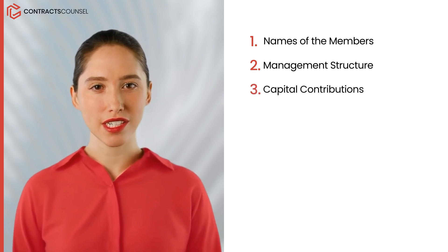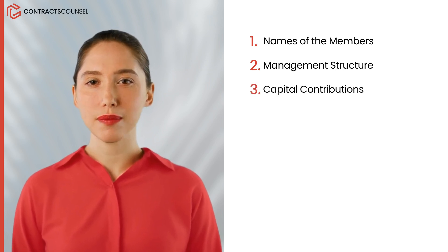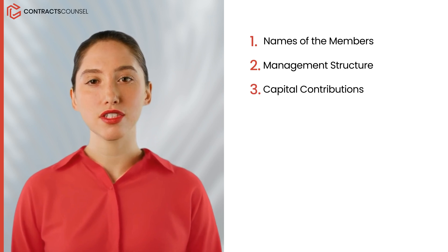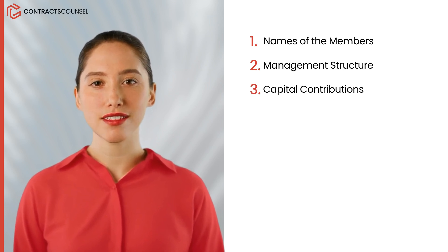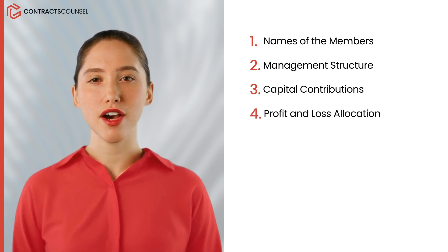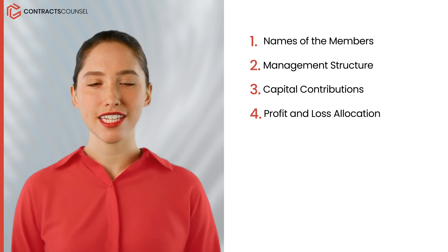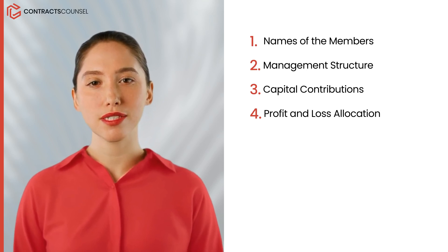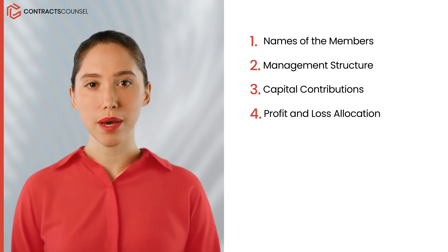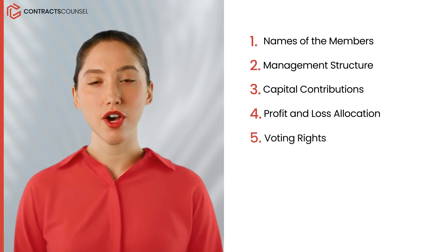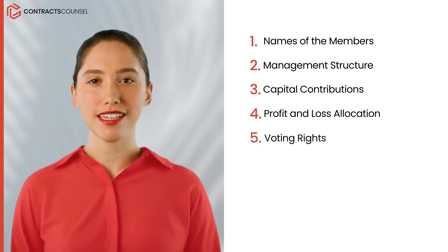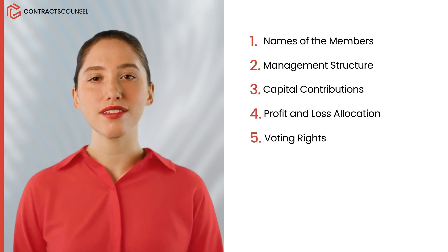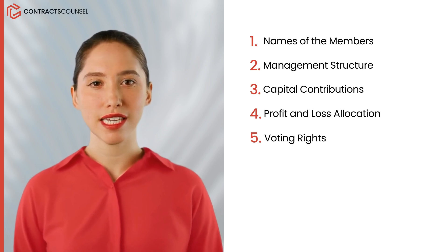3. Capital contributions — this specifies the amount of money or assets each member is contributing to the LLC. 4. Profit and loss allocation — this details how profits and losses will be distributed among the members. 5. Voting rights — this outlines the voting power of each member and how decisions will be made.